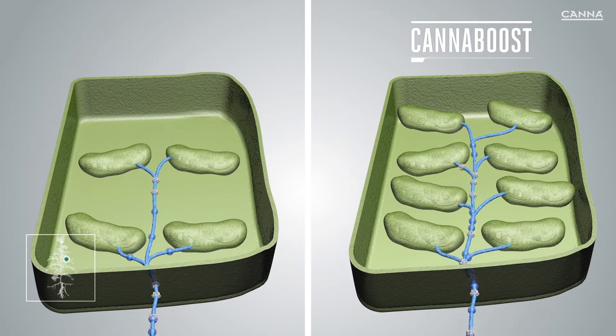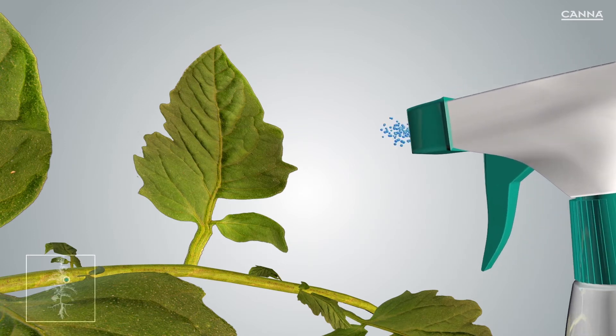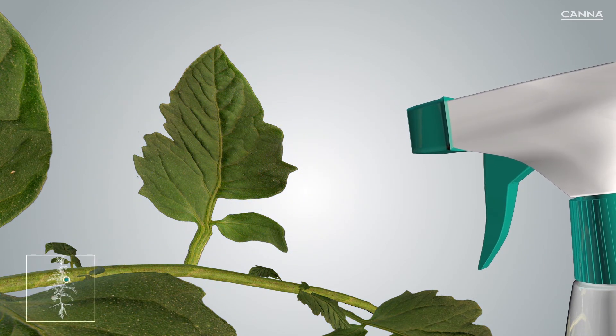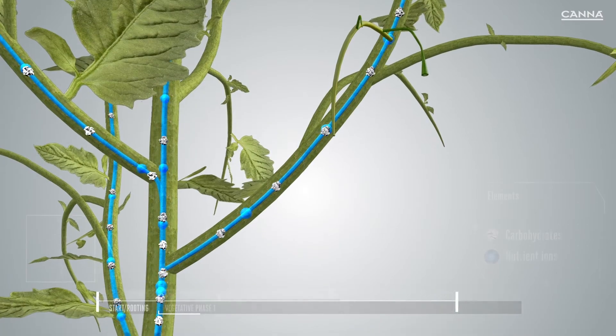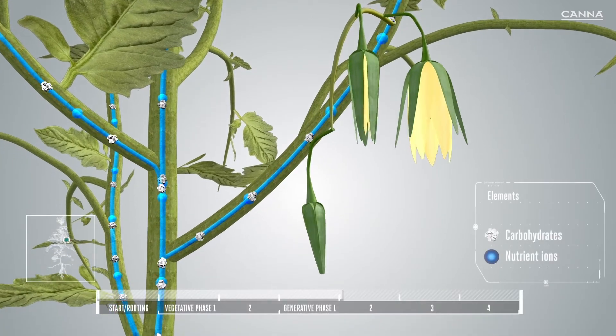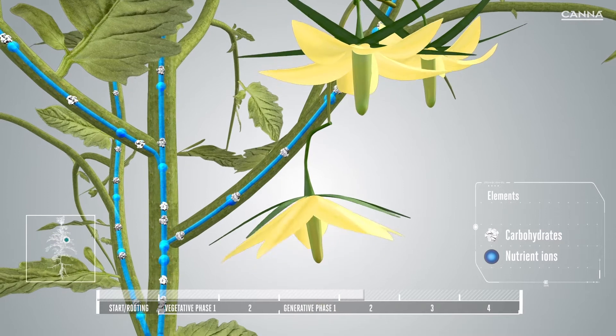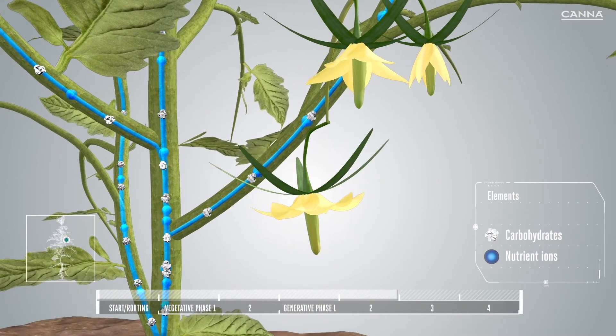It's also possible to apply Canna Boost directly to the leaves to speed up absorption. Using Canna Boost in a foliar spray, you can start right from the beginning of the vegetative phase. Whether applied to the roots or as a foliar spray, Canna Boost helps the flowers grow bigger.